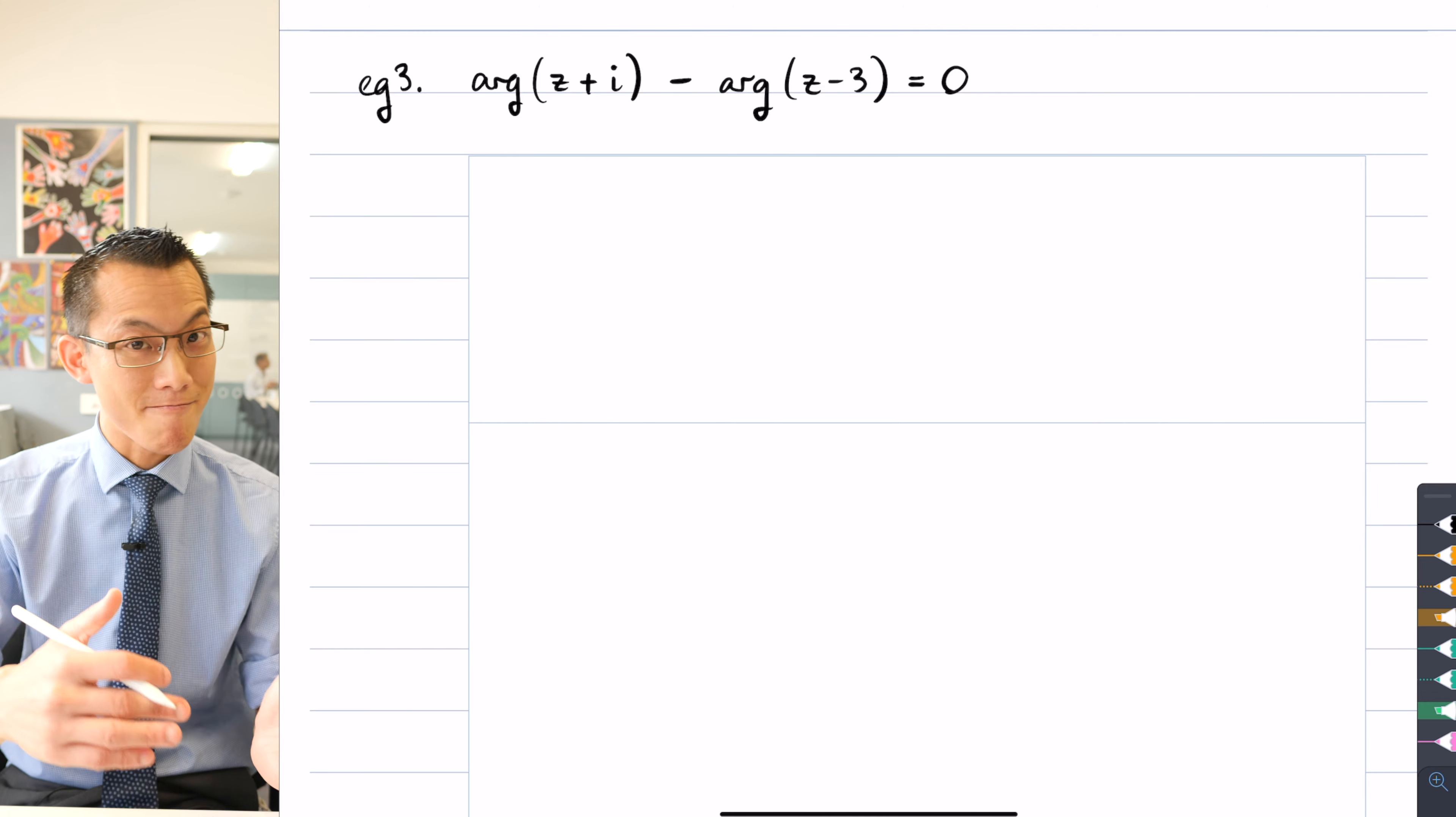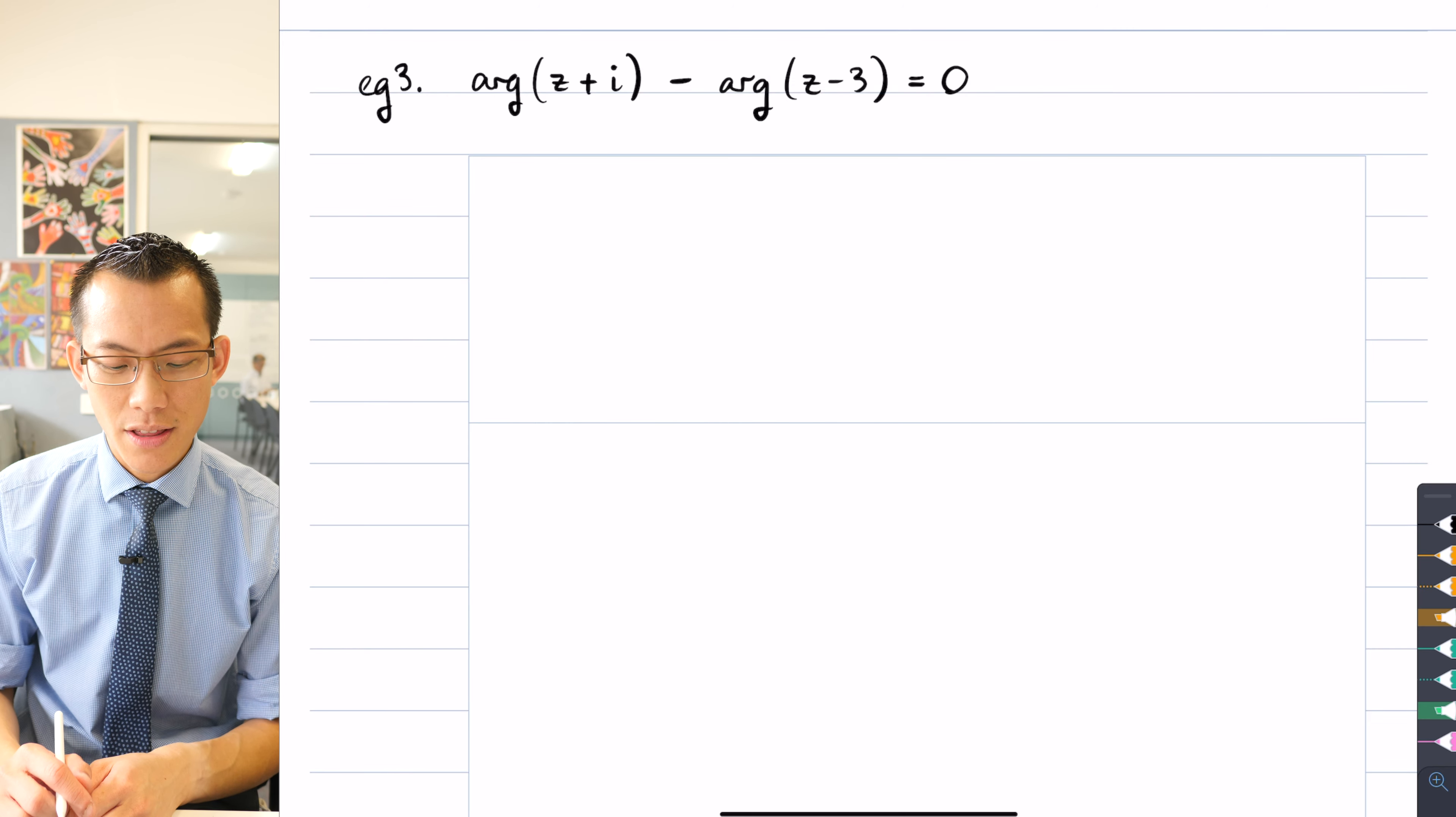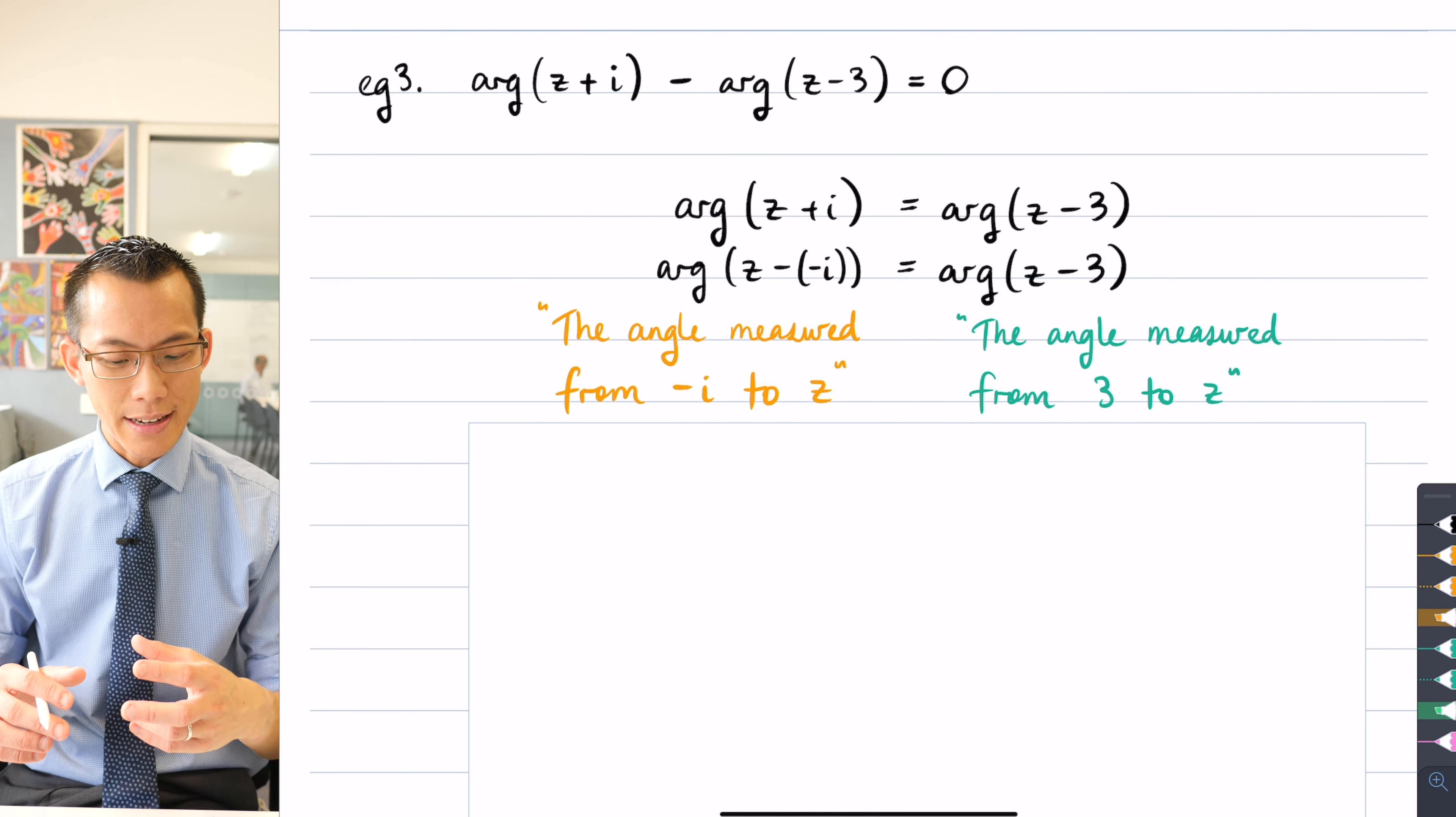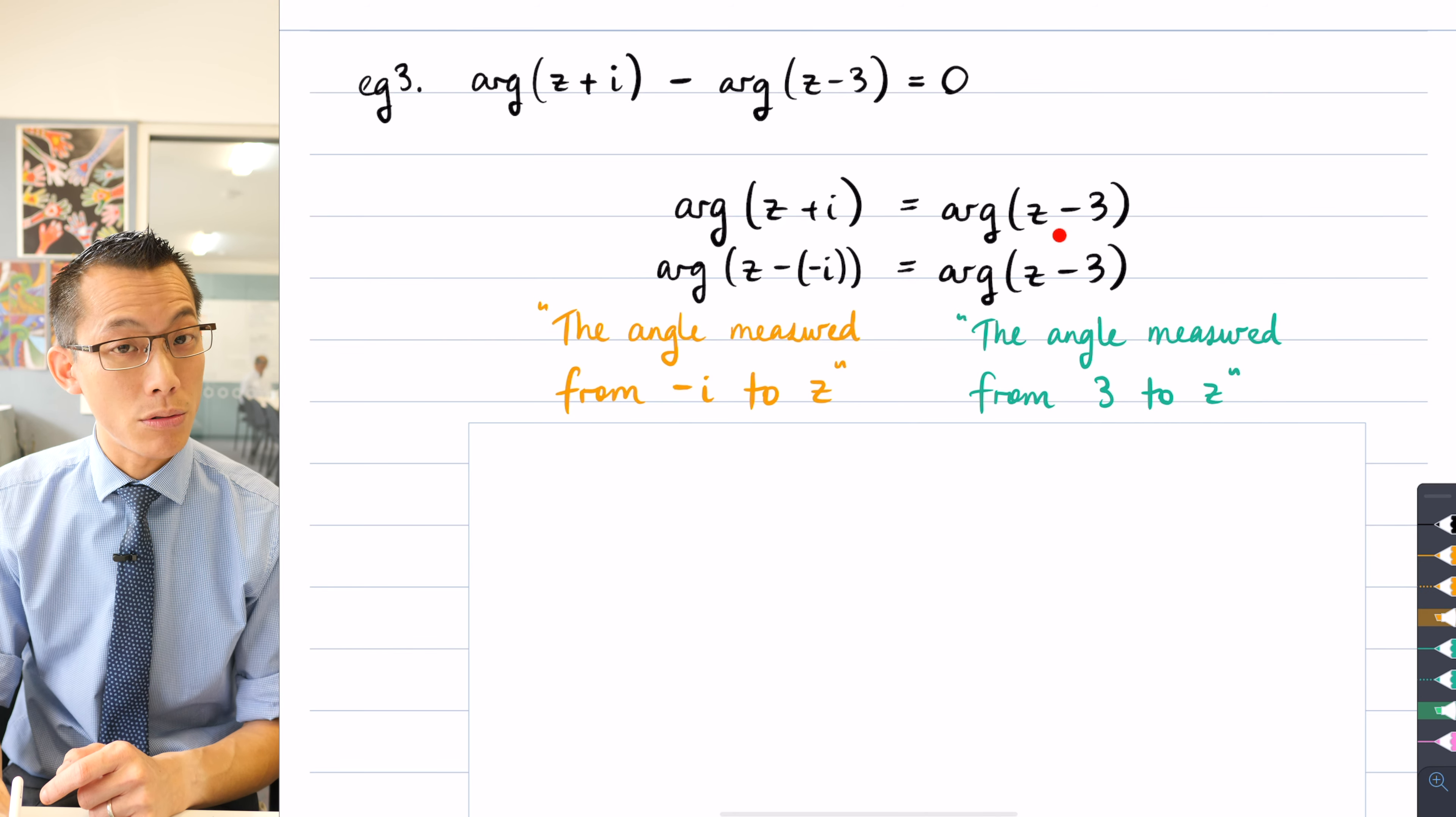Now just in case you haven't seen the previous lesson on which this one is following on from, let's review. We encountered this equation and then to think about it in visual terms, what I did was I added arg(z-3) to both sides which then presented me with this argument being equal to this argument.